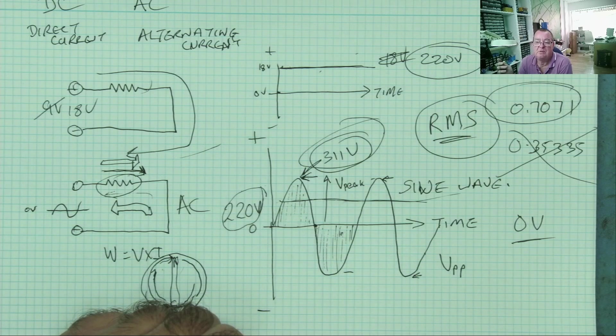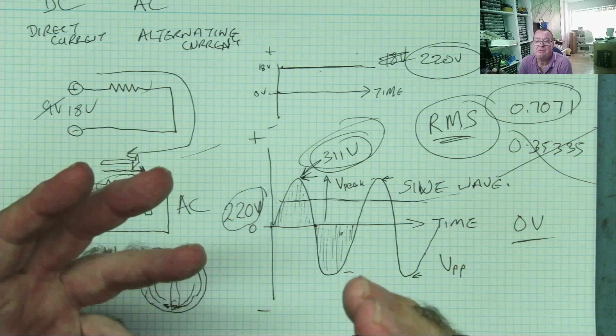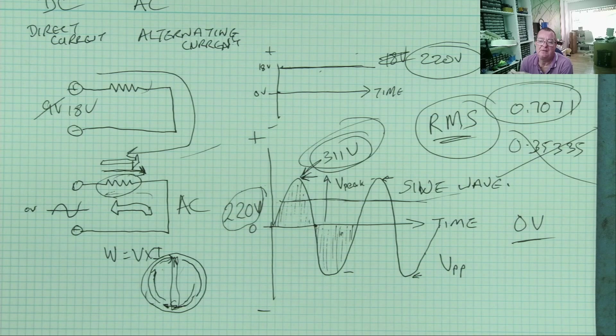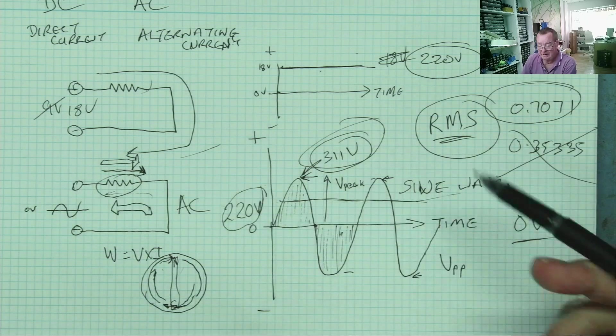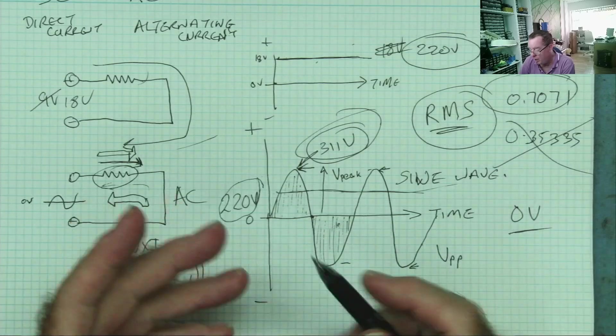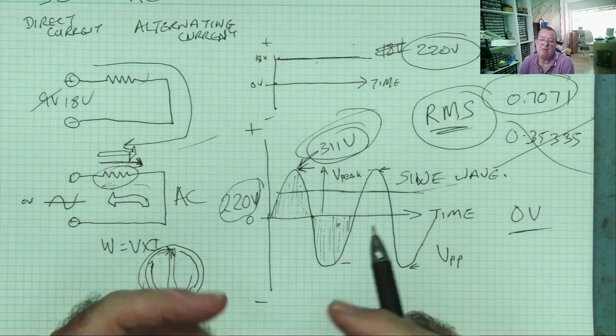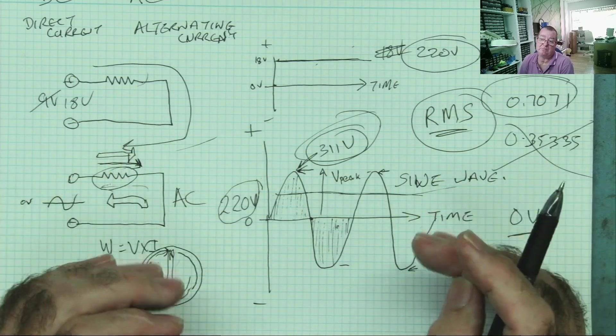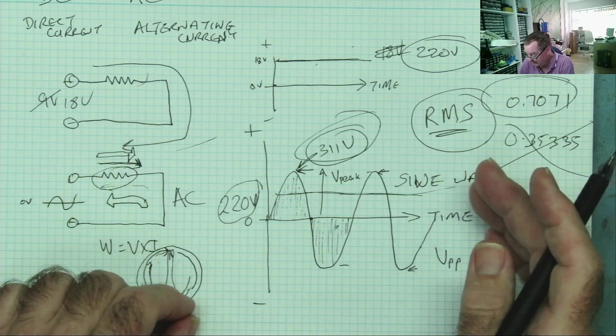And electricity is not only used for power. It can also carry data or information. For example, when you are listening to stereo music on your hi-fi, the audio is actually a waveform and it's AC. Low frequency AC gives you the bass sounds, high frequency AC gives you the top sounds. Yeah, the treble.